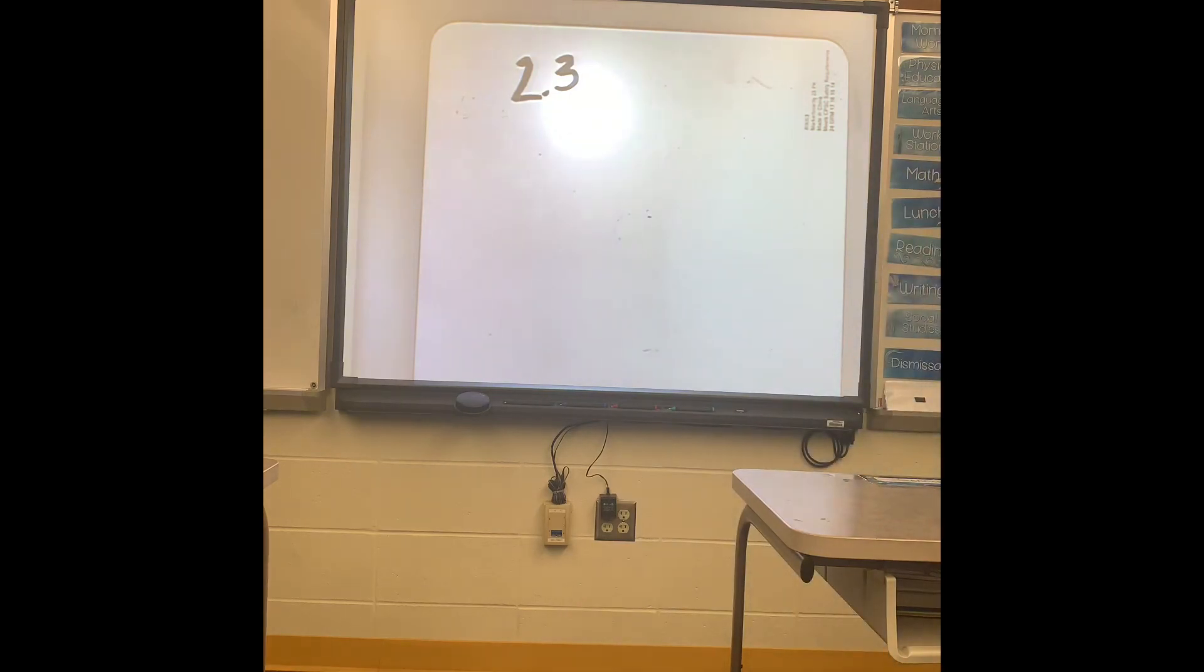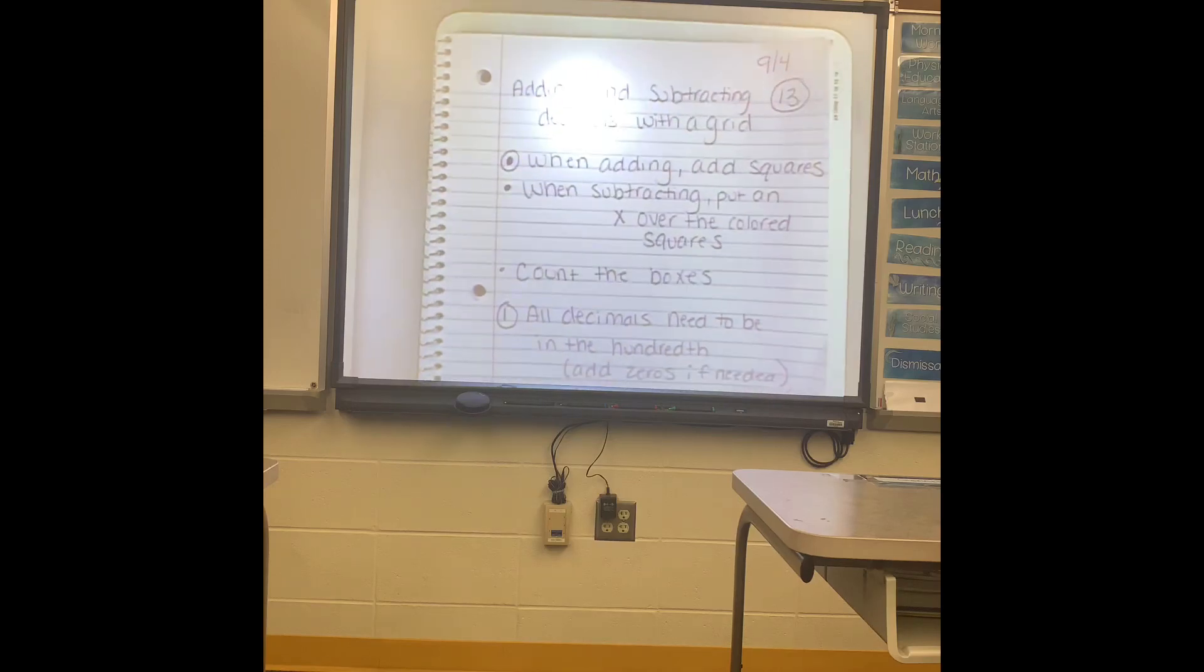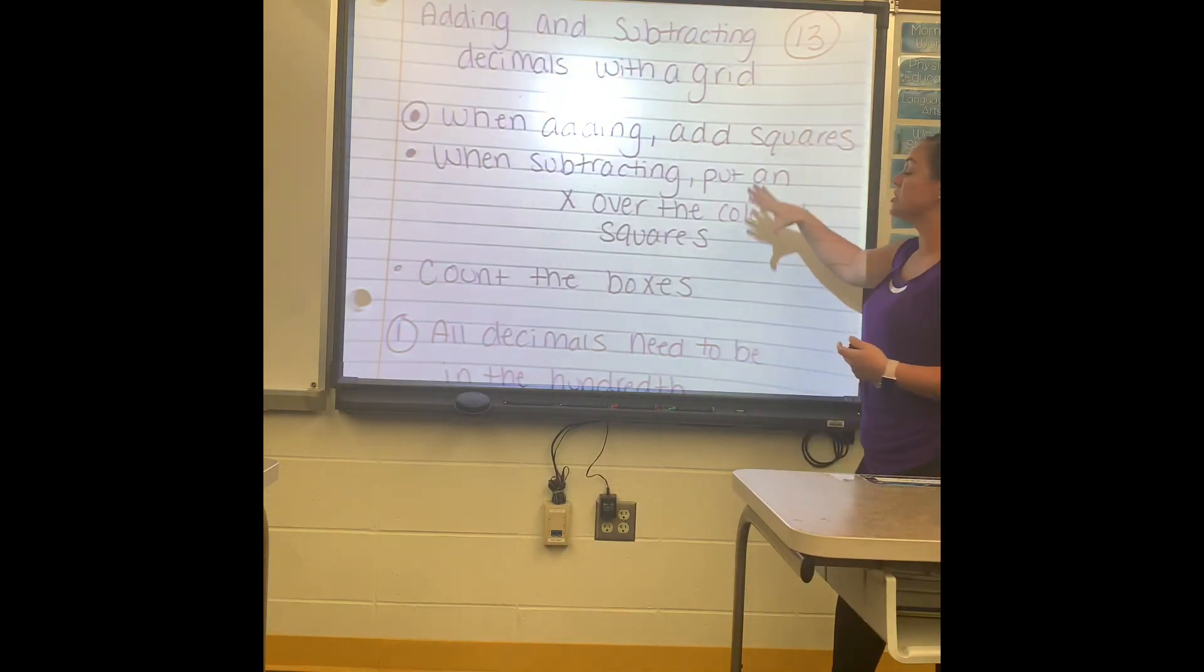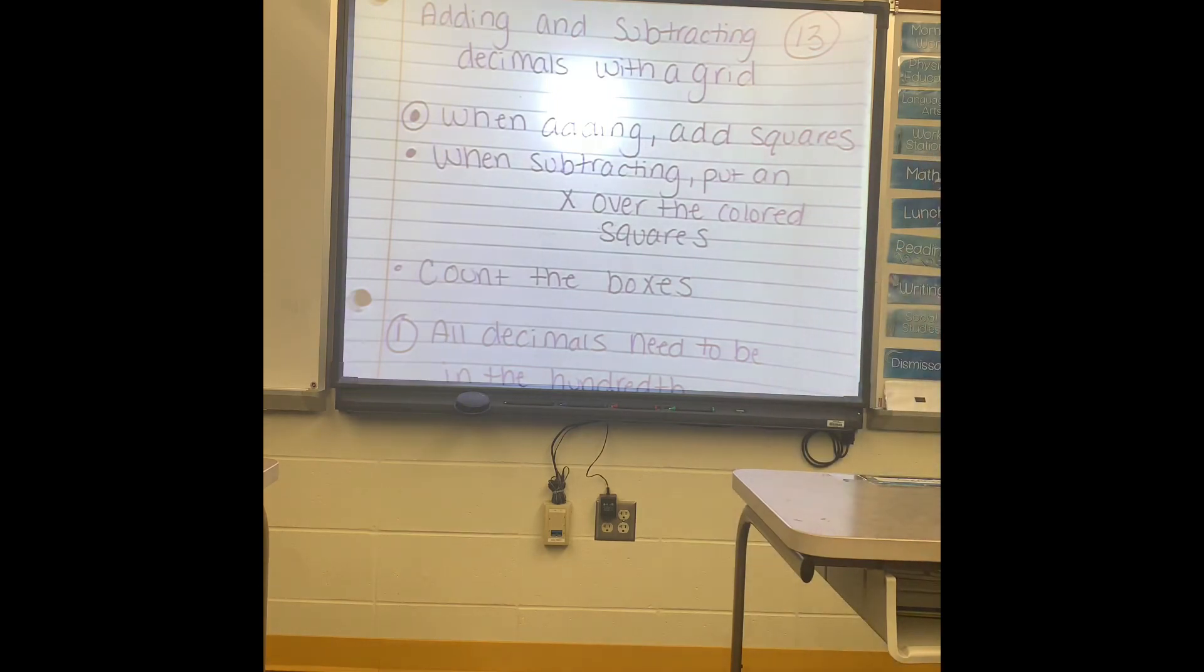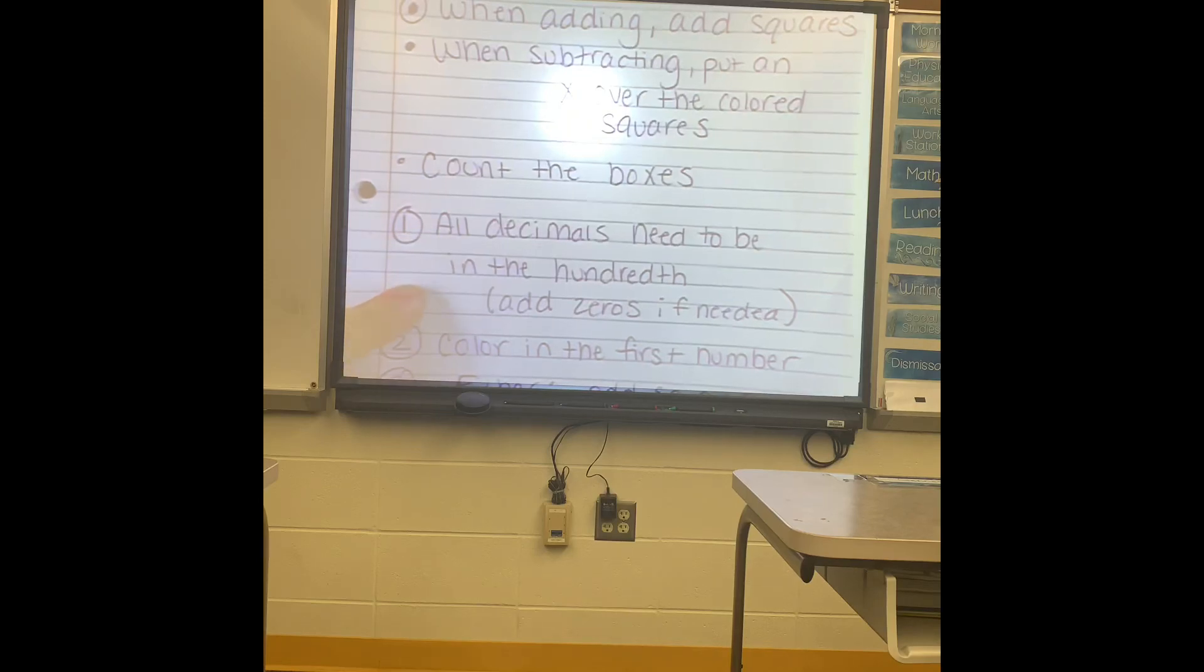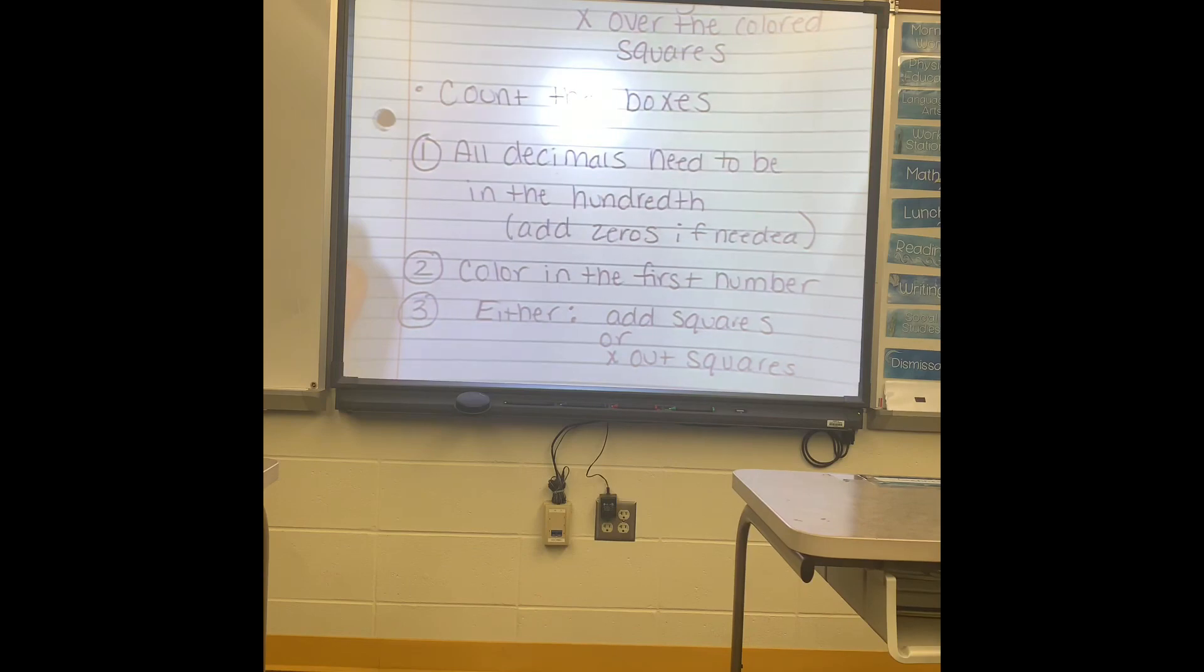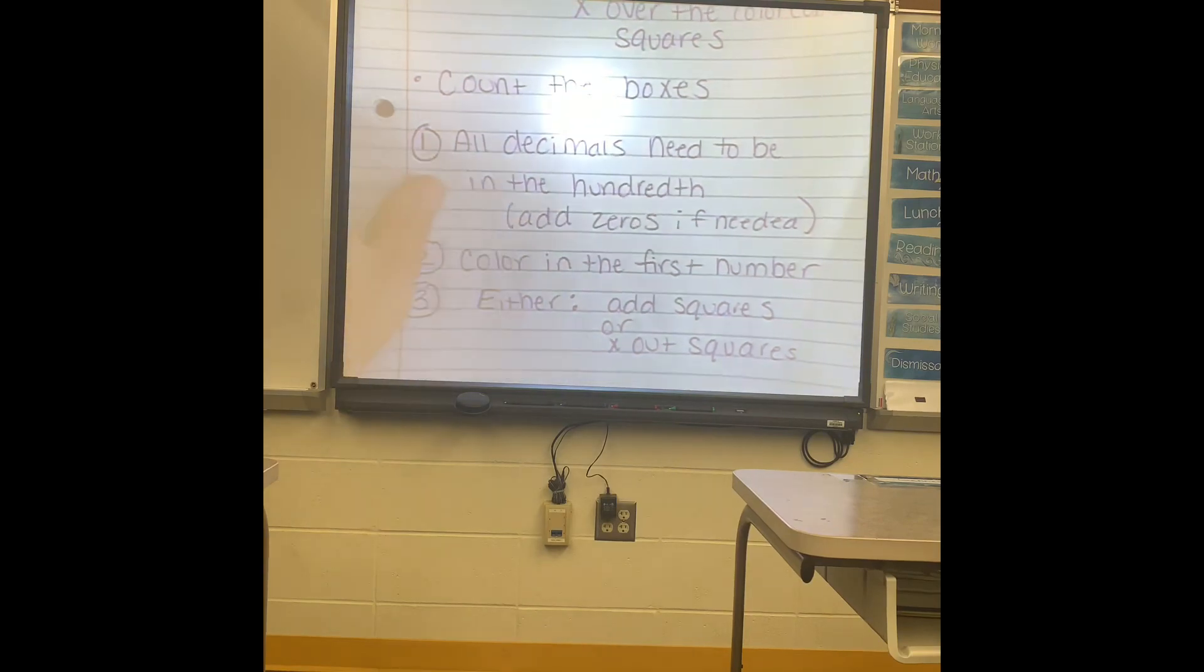So I will show you the general notes that we took in class today. It's mostly hands-on that you need to do. In general, when adding you just add the squares from the hundredth grid. When subtracting you're going to put an X over it. One of the biggest things is all decimals need to be to the hundredth place, so add zeros if needed. Color in the first number and then either add squares or X out squares depending on if you are adding or subtracting.